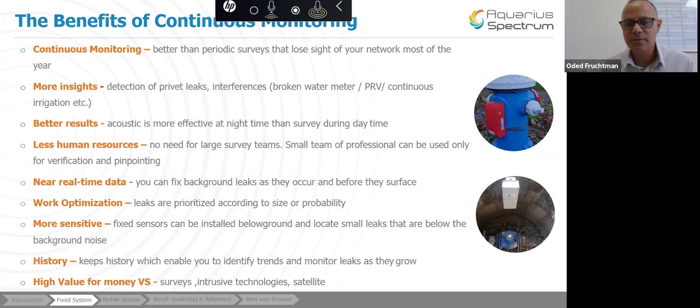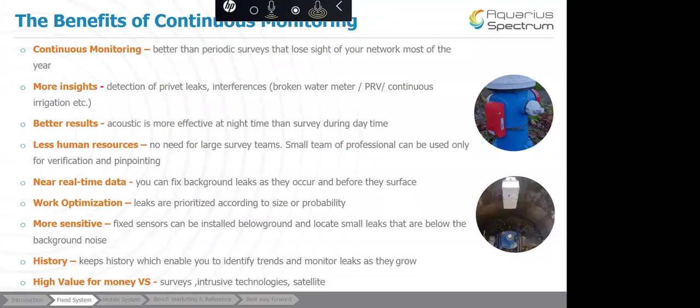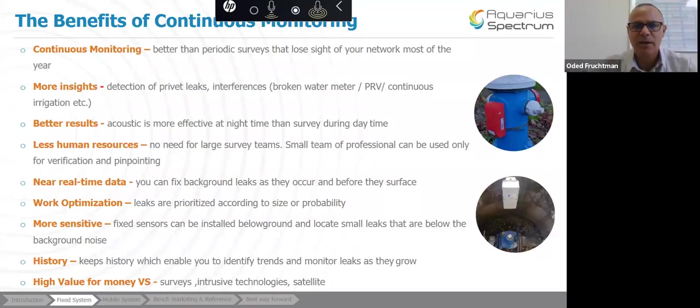You need less human resources, obviously, because you need to send teams over just for verification and pinpointing only on specific sections of the pipe where the fixed system would tell you that you have points of interest, rather than having large teams that go on and do surveys periodically. The fact that you are constantly monitoring allows you to pick very very small leaks as soon as they develop. So that's another huge benefit. And actually, you can actually fix them before they actually surface.